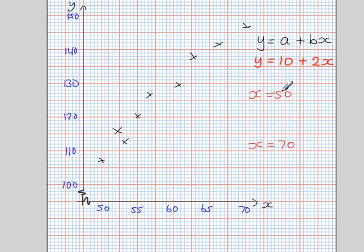So if you put x equals 50 into the regression equation here, you get y equals 10 plus 2 times 50, which gives you 110. And if you do the same with x equals 70, you get y equals 10 plus 2 times 70, which gives you 150.